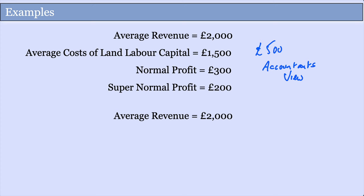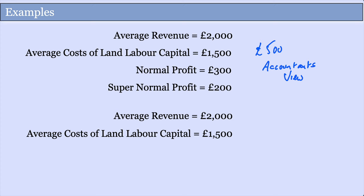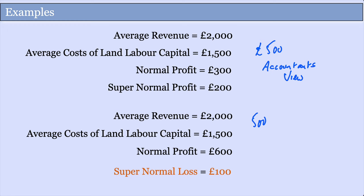Take another example: if you're earning £2,000 and your costs of labour and capital are £1,500, but your normal profit is £600 — meaning you could get £600 elsewhere — the accountant still says you've made £500. But you're actually making a supernormal loss of £100, because you could earn more elsewhere. This shows the usefulness of the normal profit concept.